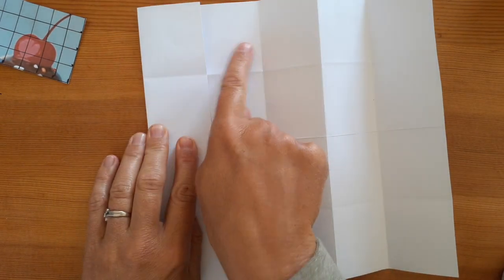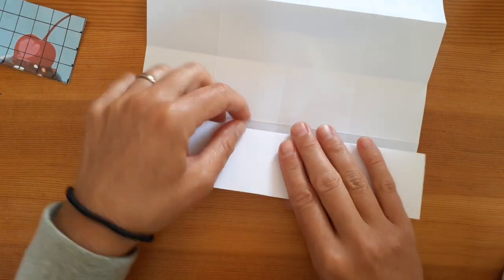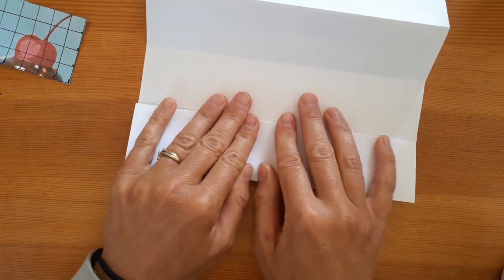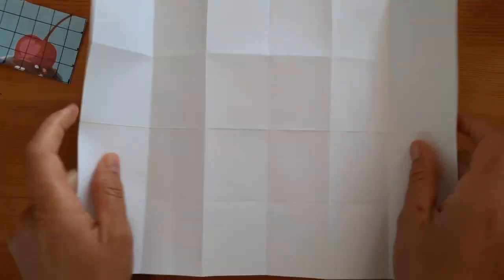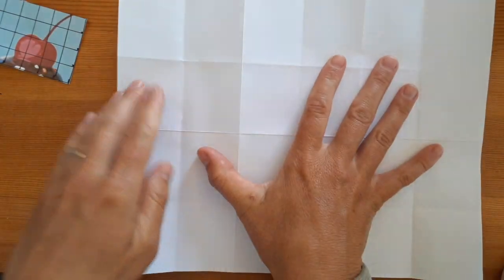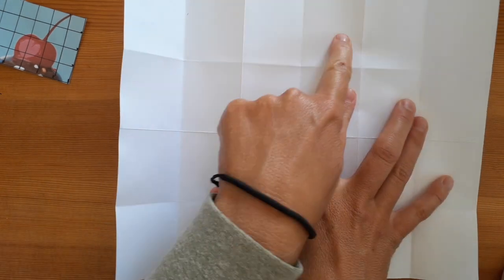Now flip over and you'll fold the folded edge to the center again. Once you flip over, you'll see that you have six spaces altogether going across, and those six spaces will match the six spaces that you've drawn on your grid of your picture.